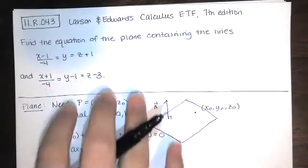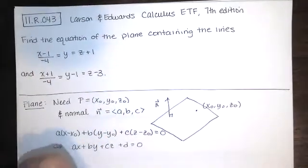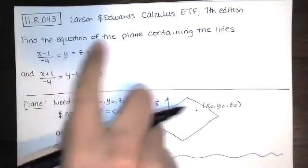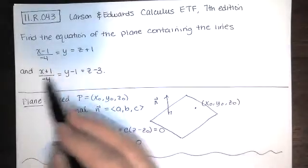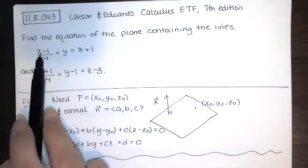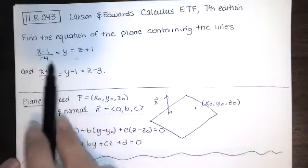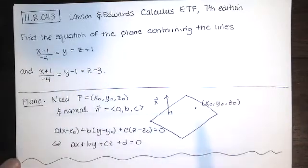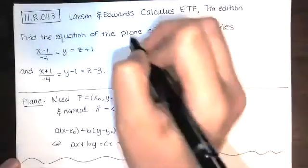Let's look at the information we're given and try to get from that information to a point and normal vector. We're told our plane contains two lines. Knowing what point is guaranteed to lie on each line and what the direction vector is for each line will help us tremendously. We didn't talk about the symmetric equations of a line very much at all.